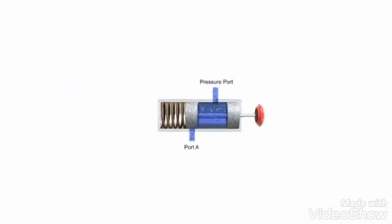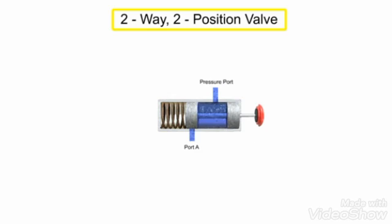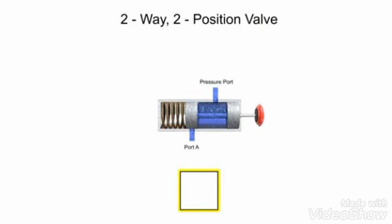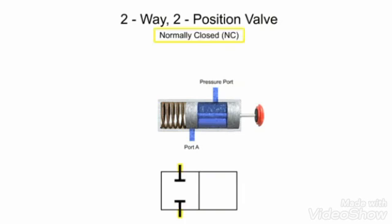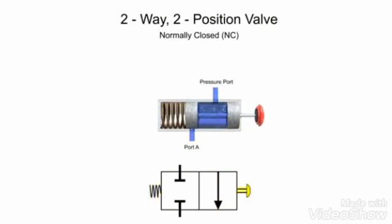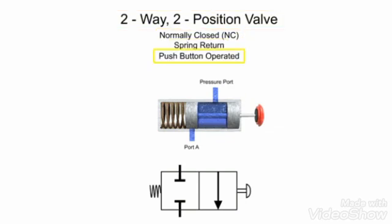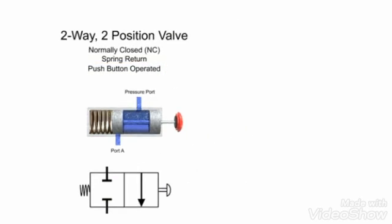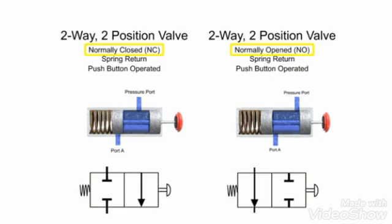Here is a similar valve to the one previously shown. It has two ports and two positions, so it is also a two-way, two-position valve. However, in the normal non-actuated position, both ports are blocked. Therefore, it is a normally closed valve. When the valve is actuated, fluid is allowed to flow from the pressure port to port A. A spring returns the valve to its normally closed position and a push button actuates it to the open position. Therefore, this valve is a two-way, two-position, normally closed, spring return, push button operated valve. While it is similar to the previous example, the differences in the normal position make it a distinctly different valve.